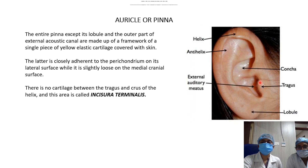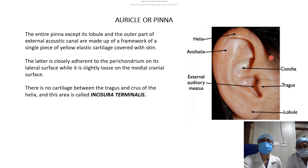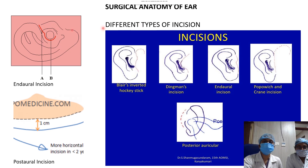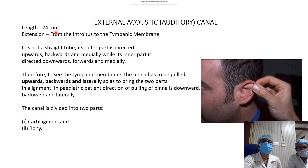There is no cartilage between the tragus and the crux of the helix; this portion is known as the incisura terminalis. An incision can be placed here without damaging any cartilage of the pinna, allowing approach to the external auditory meatus and into the middle ear. This approach is known as the endaural approach and the incision is the endaural incision.